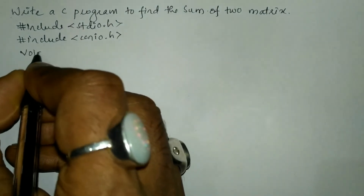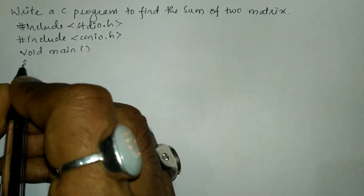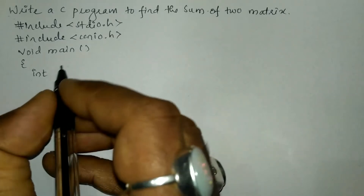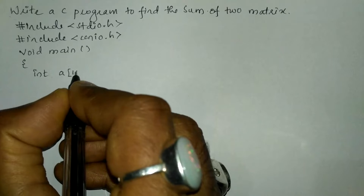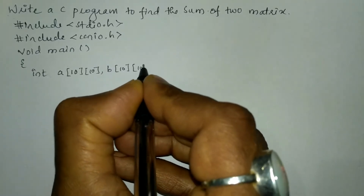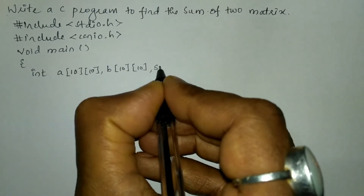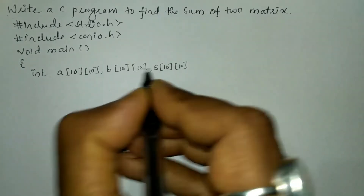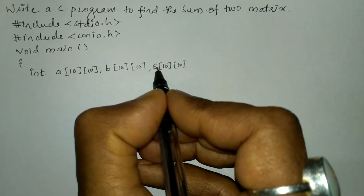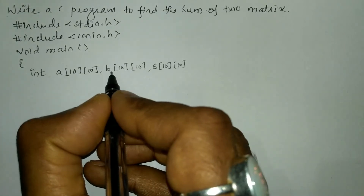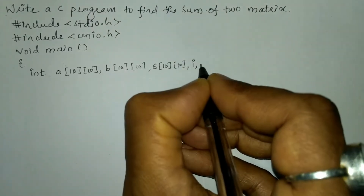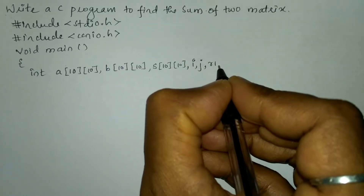Now let us write the void main function and open brace. Here I'm going to declare all the necessary variables to be used in the program. I'll write data type int and take one matrix called A of size 10 by 10, one more matrix called B of size 10 by 10, and one more matrix called sum of size 10 by 10. So A, B, and sum are all two-dimensional arrays. A plus B will be added and the result stored in sum. Next I'm going to declare subscript variables I and J, and then R1, C1.